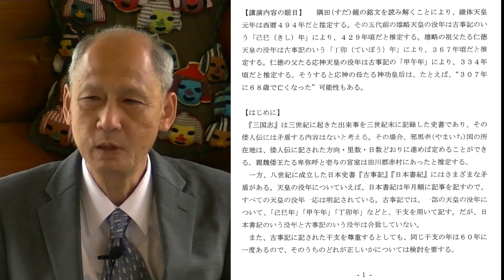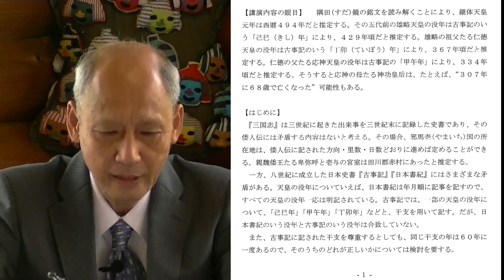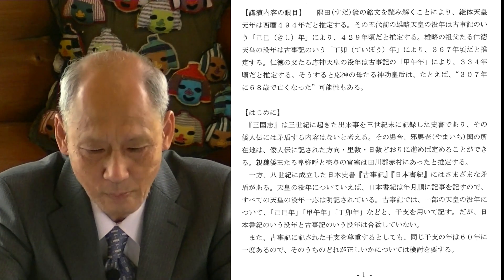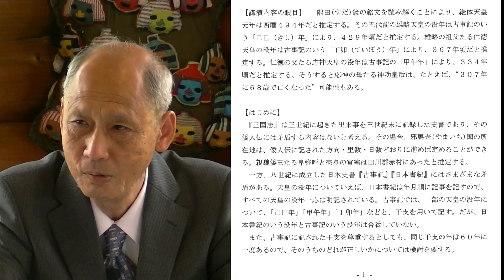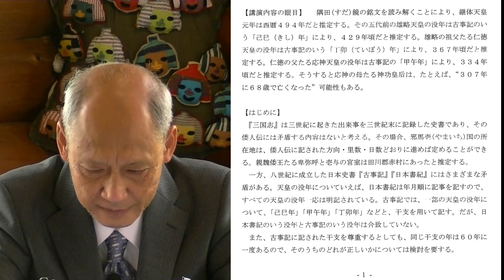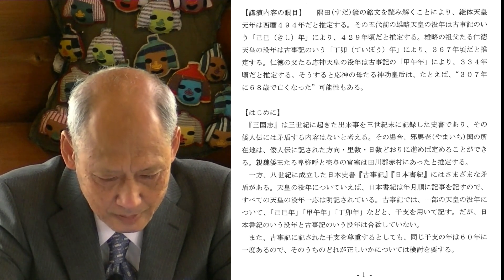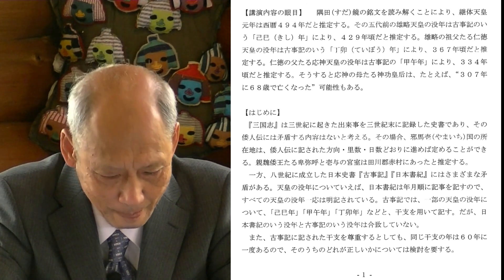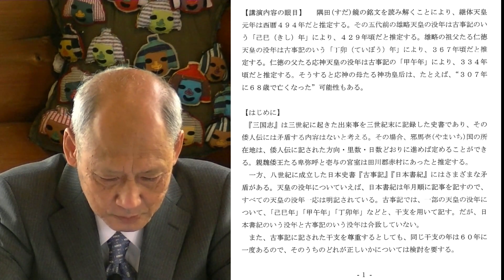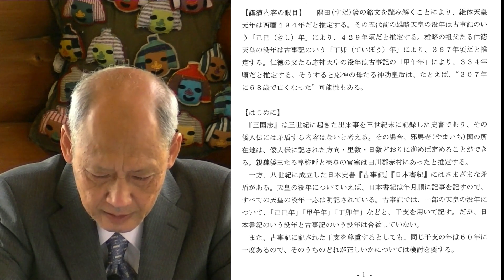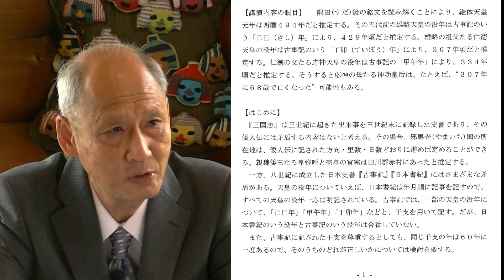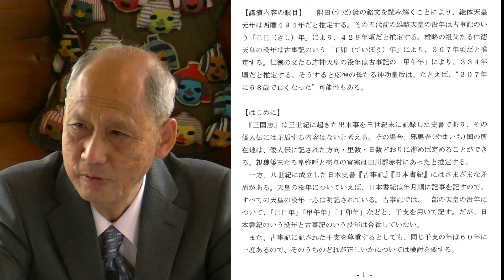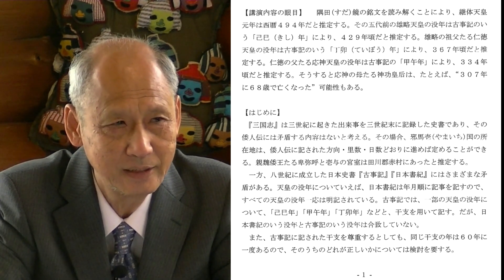結論としては、神宮皇后は赤村に都した女王一代と同年代であるということです。神宮皇后は九州の各地でよく名前が出ている人物で、応神天皇のお母さんであり、仁徳天皇のおばあさんであります。そしてこの講演の内容として一番重大なことは、須田鏡に48文字の銘文があり、この銘文を読み解かなくてはなりません。